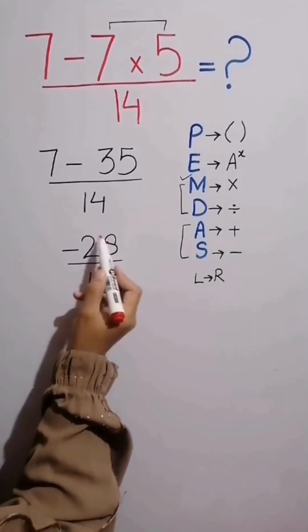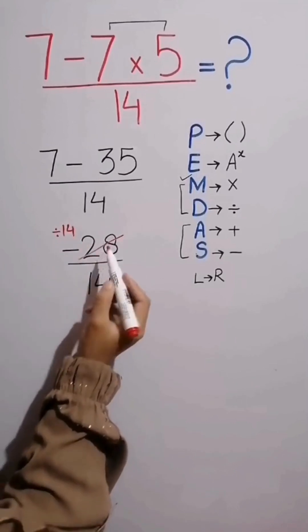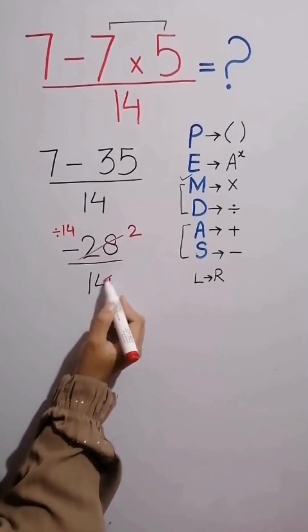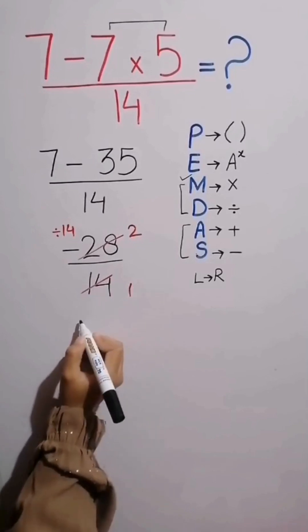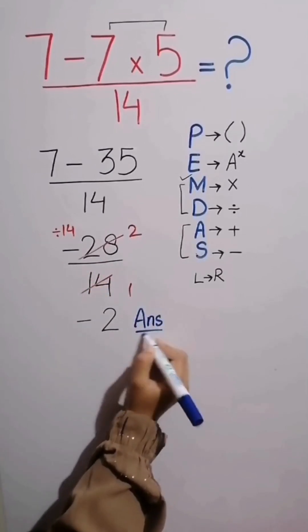Now, both numerator and denominator are divided by 14. 28 divided by 14 equals 2. 14 divided by 14 equals 1. And we get the final answer to this question. Final answer is minus 2.